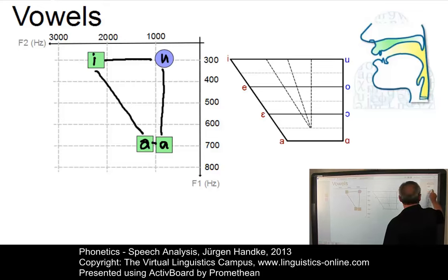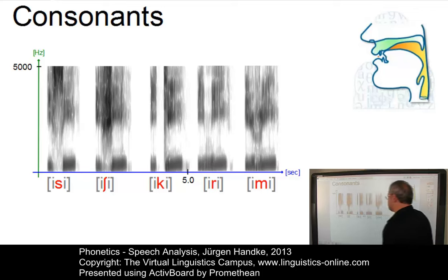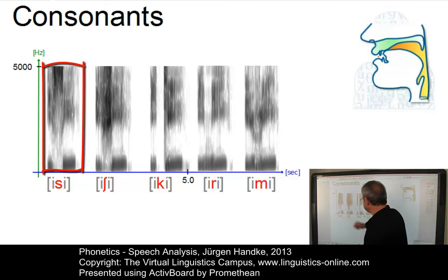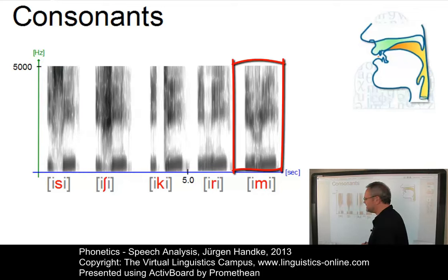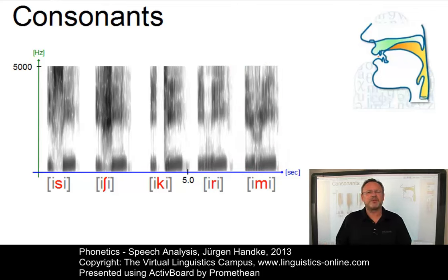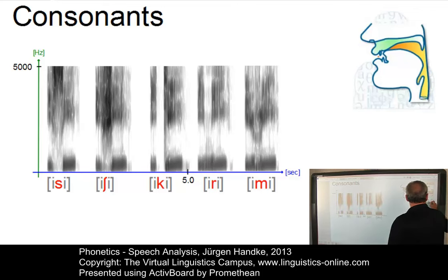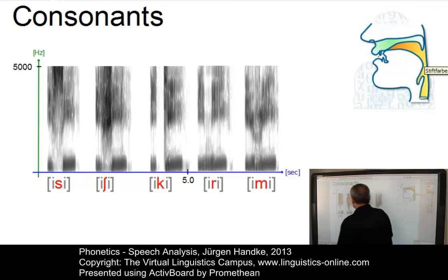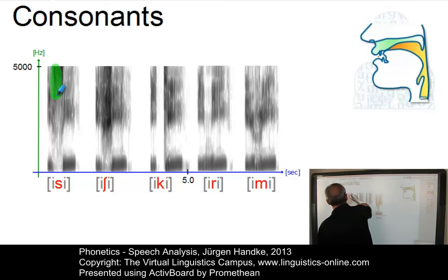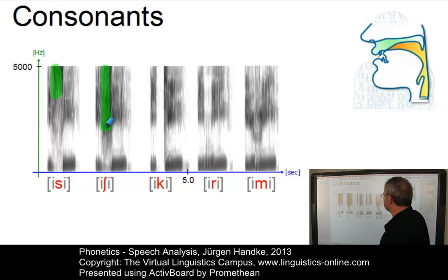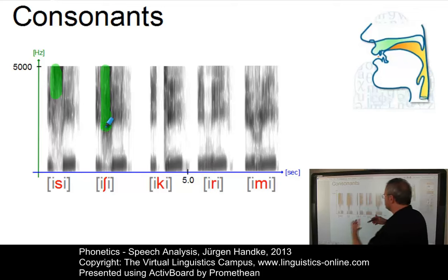Let's now take some consonants and look at their spectrograms. I have recorded some consonants in the environment of cardinal vowel 1: E-si, E-shi, E-ki, E-ri, and E-mi. Consonants cannot be classified on the basis of a well-defined formant pattern — here we have to take into account voicing, noise frequencies, formant transitions, and portions of silence. For the two fricatives, we can identify clear-cut portions of noise. For S, the noise frequency is pretty high, above 3500 Hz. For SH, it's a bit lower, going down from about 2000 to 1500 Hz — a remarkable difference between these two consonants.